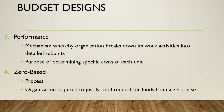Then we can look at performance-based budgeting. It's a mechanism where an organization breaks down activities into detailed subunits to determine the specific costs of each unit — for example, how much does it cost to run youth programs, maintain ball fields, or handle administrative tasks? Then there's the zero-based budget, which is more of a process than a specific budget type. The organization is required to justify the total request for funds from a base of zero each budget cycle — what do you need to get by, not necessarily what you used last year.